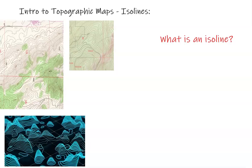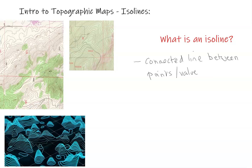So what is an ISO line? An ISO line is a connected line between points of equal value. The word ISO derives from Greek and means equal — so it is a line that connects equal points or values on a map.